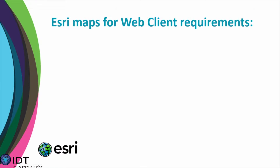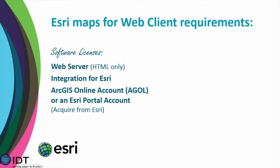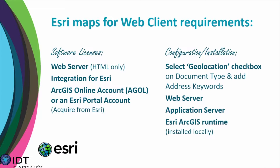What are the requirements to make this happen? From a software perspective, you must have the web client and our integration for Esri. You also need either an AGOL or an Esri portal account, acquired from Esri. Many of you may not even know that you either already have Esri or are eligible to get some Esri licenses for free — certainly some test licenses — and many higher education organizations can get licensing for free from Esri. For configuration on the document type, you'll select a geolocation checkbox so that documents can be sent to the map, and you also need four address keywords: city, state, address, and postal code, as they relate to location in the world.